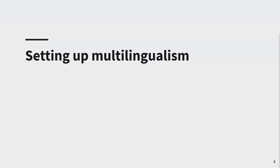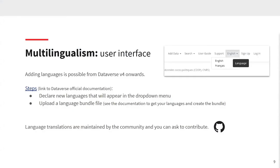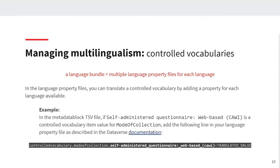As an institutional repository, adding support for French language was part of the specification. Adding languages is possible from Dataverse version 4 onwards. If your languages are already supported and you don't have a custom metadata model, the steps are quite straightforward. As explained in the Dataverse online documentation, you will need to declare new languages that will appear in the drop-down menu, then upload a language bundle file using translations maintained by the community. Feel free to contribute to complete missing translations and add new languages. You can add translations for anything in Dataverse, even for custom metadata models, including controlled vocabularies — but you will need to do additional work.